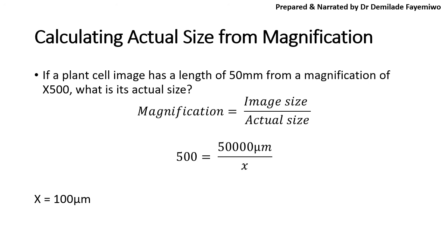So calculating actual size from magnification is very simple. Again, you simply use the formula magnification is equal to image size over actual size, and you've already been given the magnification in this question here. You've also been given the image size. But take note of this. It says if a plant cell image has a length of 50 millimeters, so you have to remember to convert it to micrometers. And it has a magnification of 500 times. What is its actual size? By this time, you already know that this means it would be 50,000 divided by 500, and that would then give you 100 micrometers.